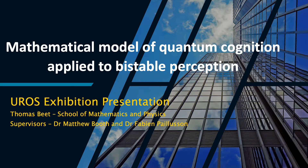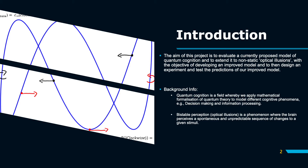Hello, and welcome to my presentation on mathematical model of quantum cognition applied to bi-stable perception for the EUROS exhibition presentation. In recent decades, past work has shown that quantum cognition and the perception of static bi-stable images can be modelled using quantum probability theory and a quantum concept known as the quantum Zeno effect. The aim of this project is to evaluate a currently proposed model of quantum cognition and to extend it to a non-static optical illusion, with the objective of developing an improved model and then designing an experiment to test the predictions of our new and improved model.